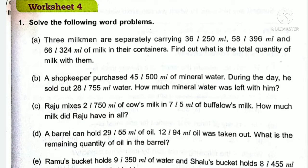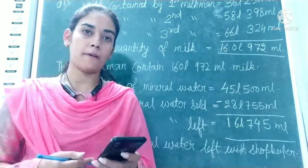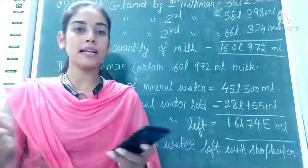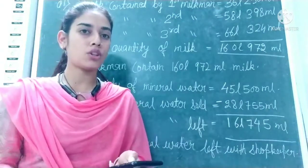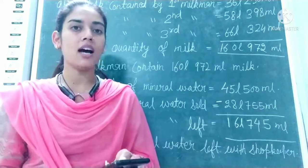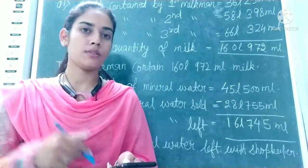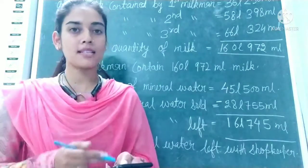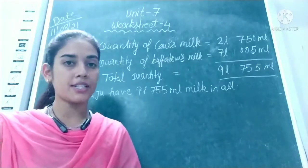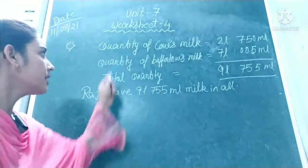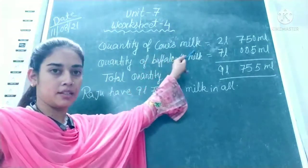We want to find how much total milk Raju has. Total milk means addition, so we will add both milks to get the total. The next step is to make a statement. First we will write: quantity of cow's milk.